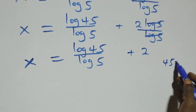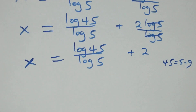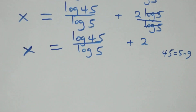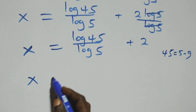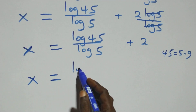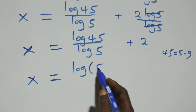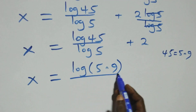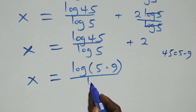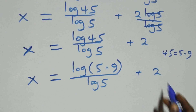Also, 45 can be expressed as 5 times 9. That is, here we have x equals to log of 5 times 9, over log 5, plus 2.